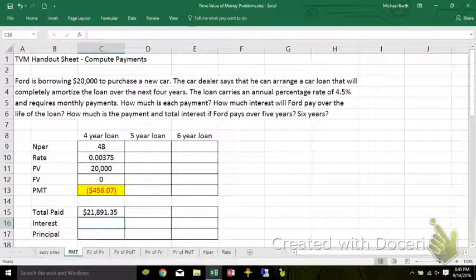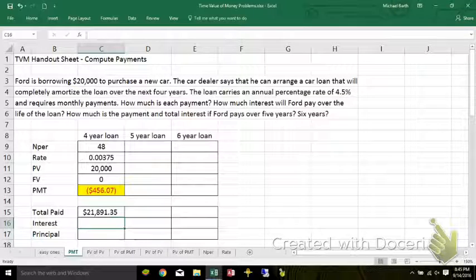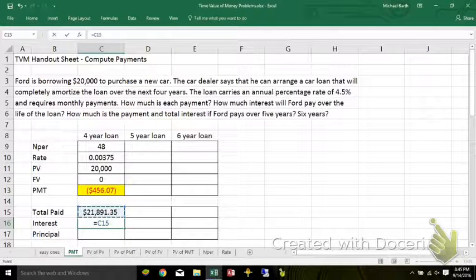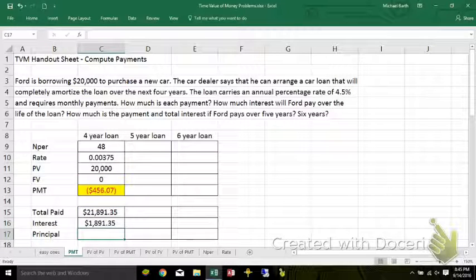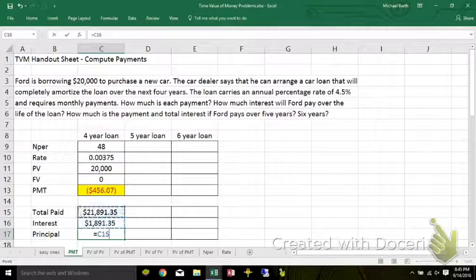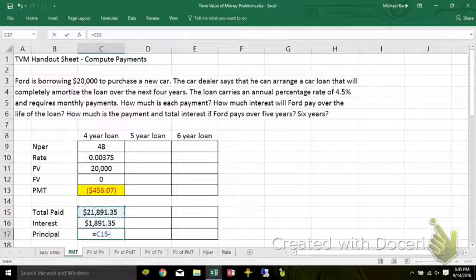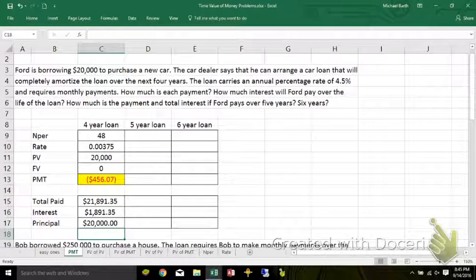So your total amount paid will be a little shy of $22,000. How much of it is interest? Anything in excess of $20,000 that you give them is interest. And the principal would be whatever they lent you.